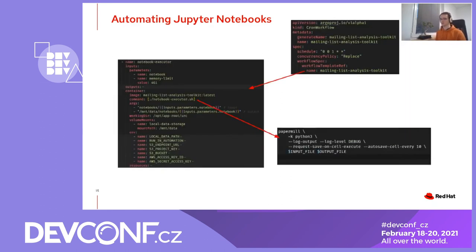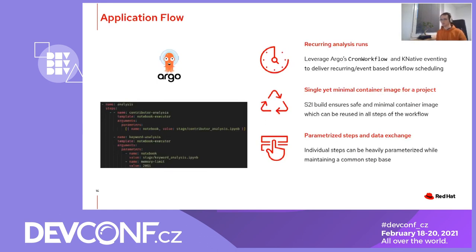Here's how it all fits together. For this particular use case, we define a recurring workflow with a cron schedule. This workflow executes a set of steps, each of which refers to a notebook executor template. This template consumes a few parameters — one of which is the notebook to be executed — and other parameters allow us, for example, to scale the pod resource requirements for that specific task. The executor template runs a command, which is a tiny bash script wrapper around a Papermill command, and Papermill then executes the notebook. Argo gives us periodic analysis runs, either on a cron schedule or triggered via something like Knative eventing on a message bus.